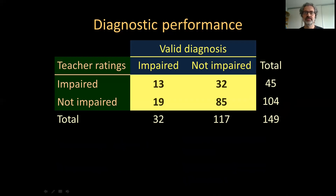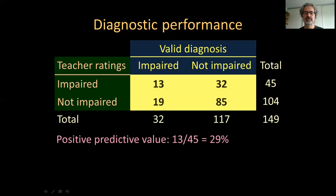Turning to the rows, we see that of the 45 children reported as language impaired by the teacher rating scale, only 13 are actually impaired. If we divide these numbers, we see that this is less than one-third — it's 29%. This is called the positive predictive value, sometimes called precision. The precision of this screening is low at 29%, meaning that a child classified as language impaired by the instrument has only a 29% probability of actually being impaired.